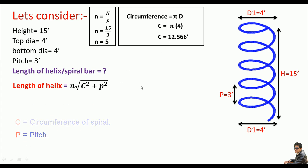Now let's do some plug and chugging in the given formula to get the cutting length of this spiral bar, or you can also say the total length of this bar. The number of turns are 5. So 5 times square root of c square. The c is 12.566 feet plus the pitch. The pitch is 3 feet. So plus 3 square.